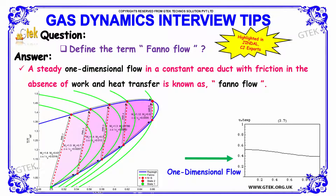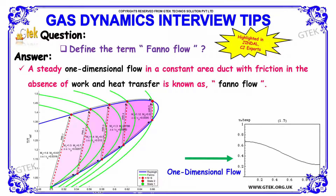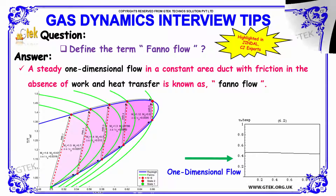The next question: define the term Fanno flow. Fanno flow is a steady one-dimensional flow in a constant area that includes friction in the absence of work and heat transfer. This is said to be called as Fanno flow.